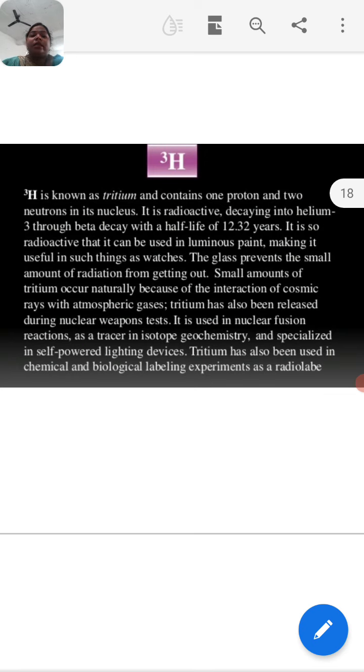3H is known as tritium and contains one proton and two neutrons in its nucleus. It is radioactive, decaying into helium-3 through beta decay with a half-life of 12.32 years. It is so radioactive that it can be used in luminous paint, making it useful in such things as watches. The glass prevents the small amount of radiation from getting out. Small amounts of tritium occur naturally because of the interaction of cosmic rays and atmospheric gases. Tritium has also been released during nuclear weapons tests. It is used in nuclear fusion reactions, as a tracer in isotope geochemistry, in specialized self-powered lighting devices, and has also been used in chemical and biological labeling experiments as a radiolabel.